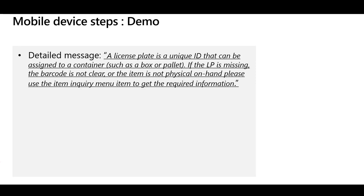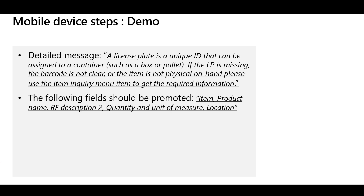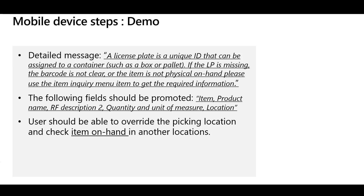Now let's review the requirements for a demo combining the three features. It's necessary to display clear instructions to users while scanning the license plates step in the sales picking process — to help new hires ramp up quickly and complete daily work efficiently. It's significant to only display specific fields to keep focus on important information, and to highlight the RF description field to ensure the user is picking the correct items, since items could be very similar to each other. It could happen that item labels are missing, the barcode is not clear, or the item is not physically at the suggested picking location. In that case, the user should be able to check item on-hand to find the license plate number, or to change the picking location to another one that has on-hand stock.